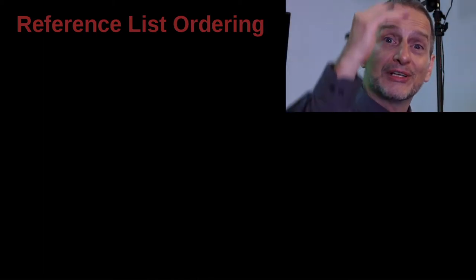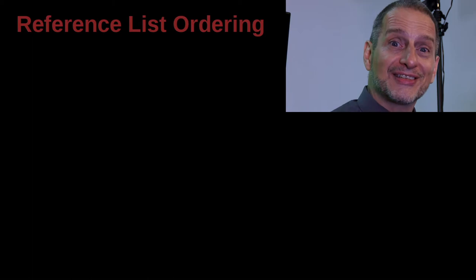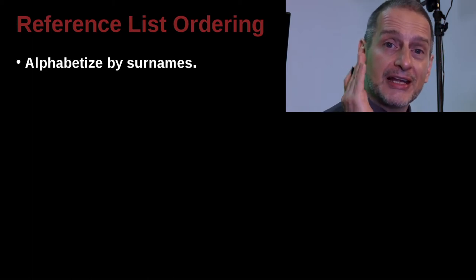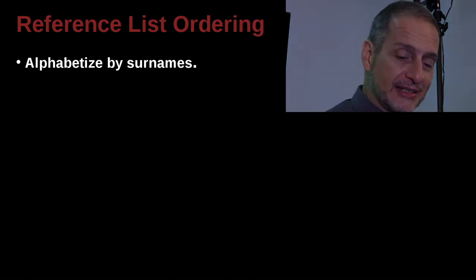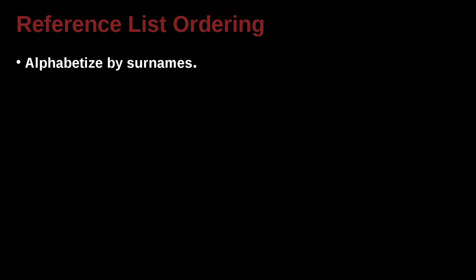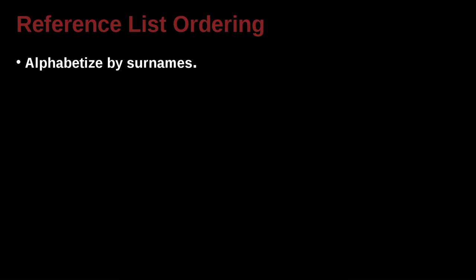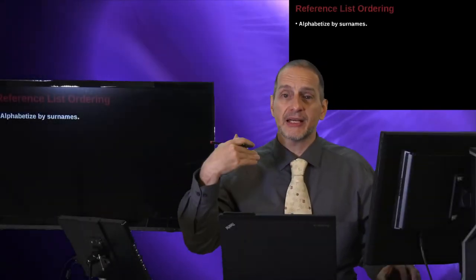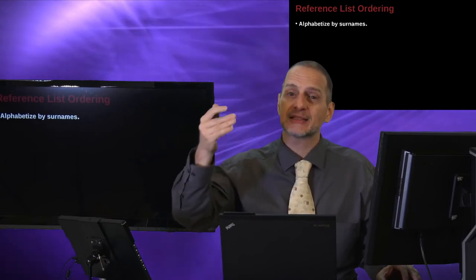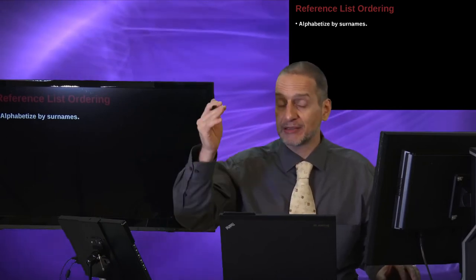So let's look at the APA system first. The very first question we come to, the very first issue we have to answer is: how do you list your list? What's the order of the list? That's very simple — it's an alphabetized list. Alphabetized by surname, that is family name. My name is Clyde A. Warden, so Warden is the surname, the family name, the last name. That's the name that's used for making the list order.